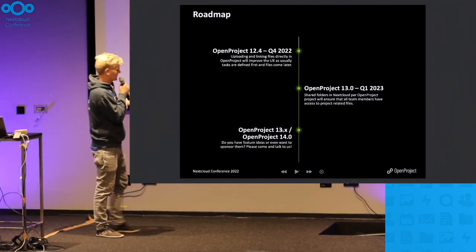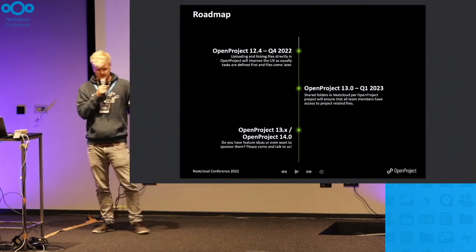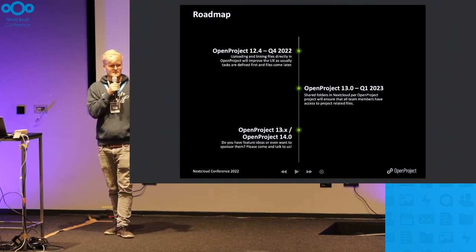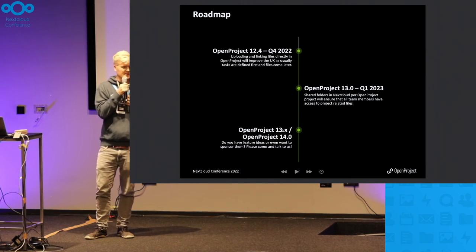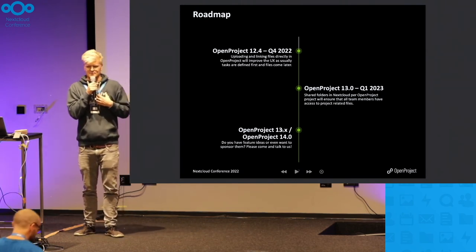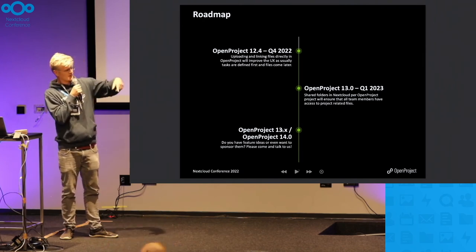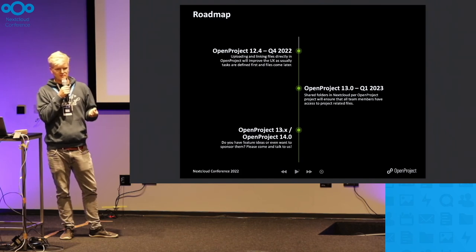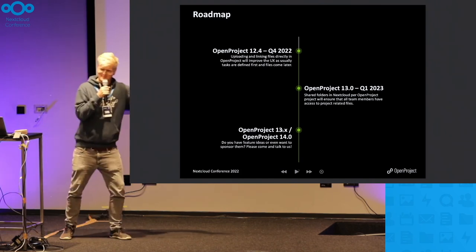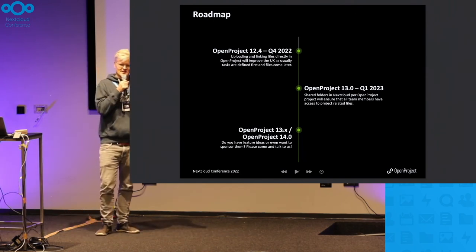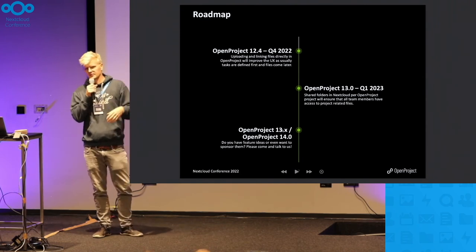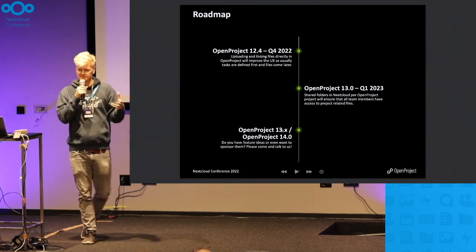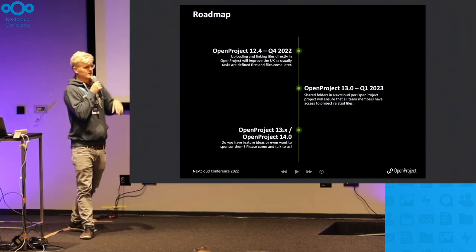Next year we will release a version that tackles the next question: now I know the file exists but it's not shared with me — how do I get access to it? In the next version, OpenProject 13, we are going to have shared folders for each project in OpenProject so that every member of the project will automatically have rights — according to their roles in the project — to open, share, and reshare files, depending on permission settings in OpenProject. OpenProject is where the team resides, and we will map that over to Nextcloud.